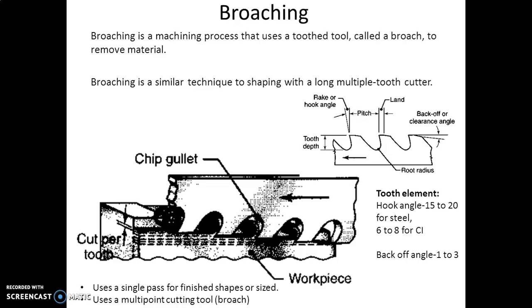The depth increases progressively, thus each tool edge takes off a successive layer of material. The primary cutting motion is translational along the broach axis. The tooth element hook angle is in the range of 15 to 20 degrees for steel and 6 to 8 degrees for cast iron, and back-off angle is 1 to 3 degrees.